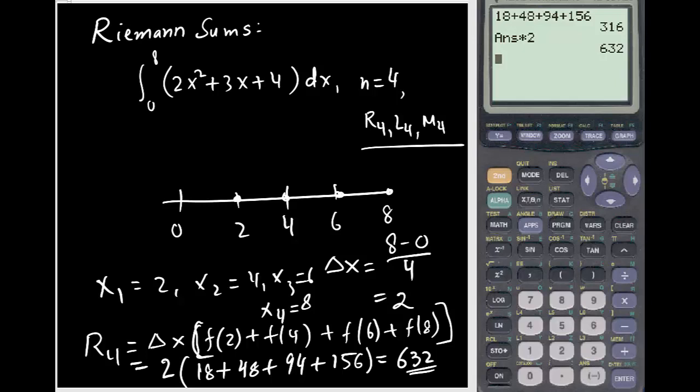Finally, when we add up all of this and multiply by 2, the right Riemann sum approximation is 632.